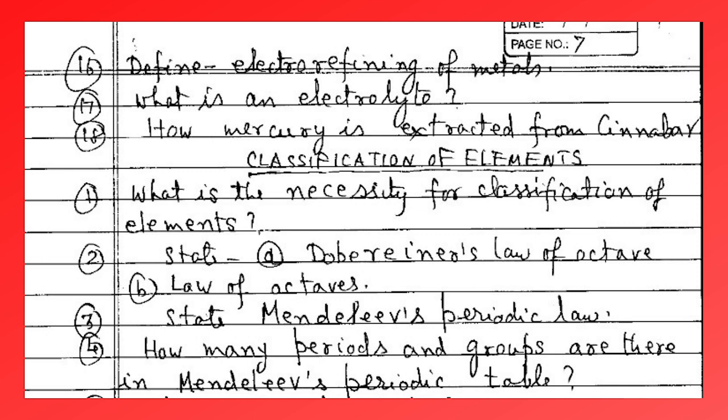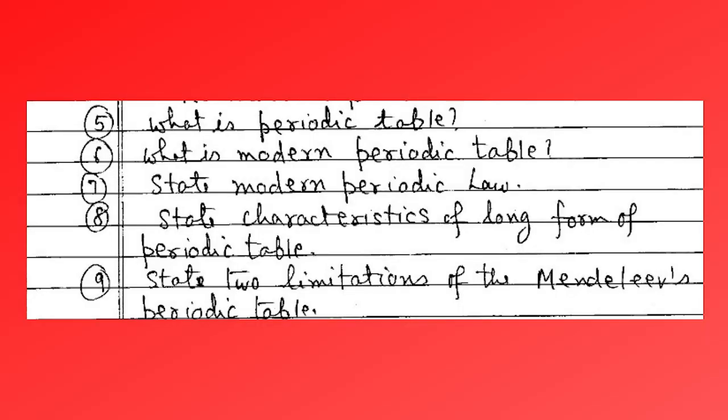Then we have the chapter on classification of elements. What is the necessity for the classification of elements? State Dobereiner's Law of Triads and Newlands' Law of Octaves. State Mendeleev's periodic law. How many periods and groups are there in Mendeleev's periodic table? What is the modern periodic table? State the modern periodic law. State the characteristics of the long form of the periodic table. State the limitations of Mendeleev's periodic table.